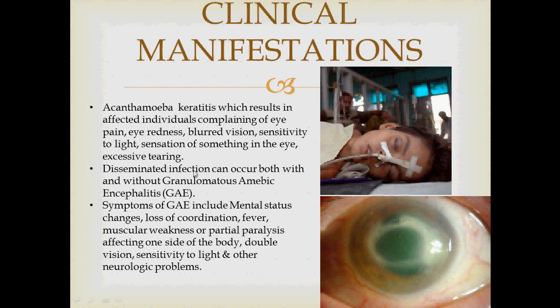Disseminated infection usually shows up as inflammation of the lungs or sinuses and/or skin infections, but has the potential to spread to the brain. Skin infections of Acanthamoeba can appear as reddish nodules, skin ulcers, or abscesses in the skin.